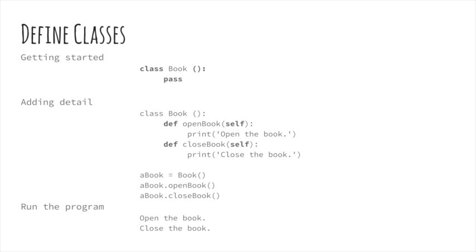This presentation will touch on the implications of a list of parent classes later, but for now the classes won't use one. The statement here is pass, which does nothing — not very useful in the grand scheme of things, but it can act as a placeholder for future development. It is possible to create an object from this class, but the object has no attributes or methods, so it can only serve as a placeholder.